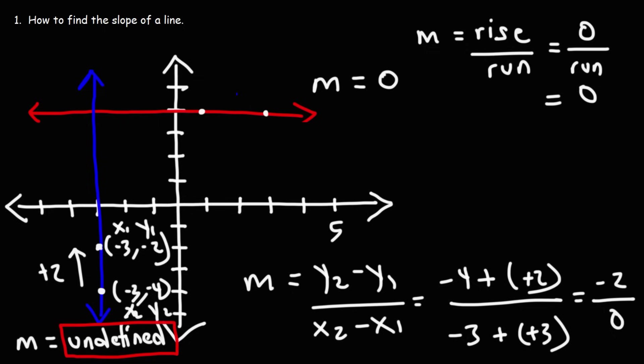To recap: the slope of any horizontal line is always zero; the slope of any vertical line is always undefined. Now you know how to calculate the slope of a line — you can use the rise over run method, or M equals Y2 minus Y1 over X2 minus X1. Both methods will work, but if you're a visual person, the rise over run method is a lot easier.